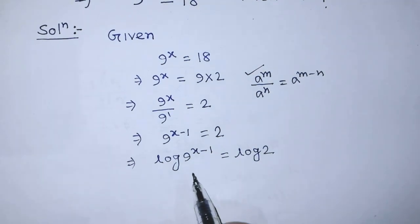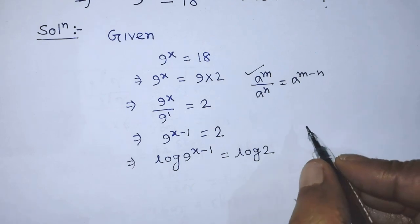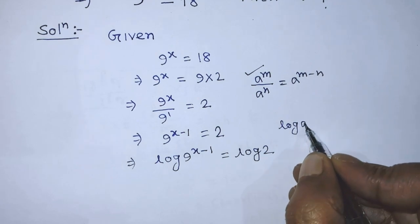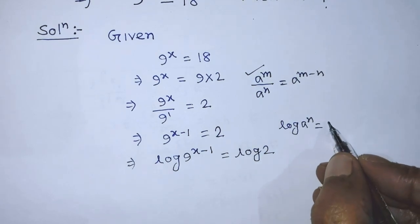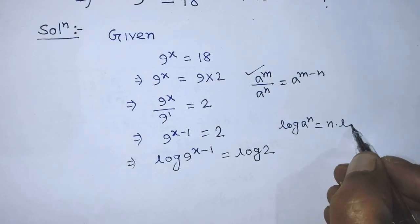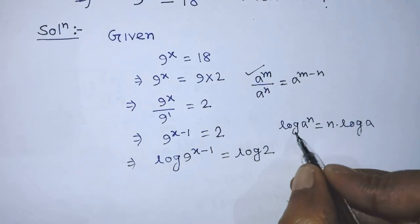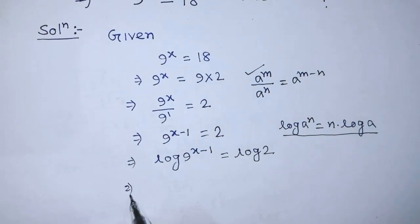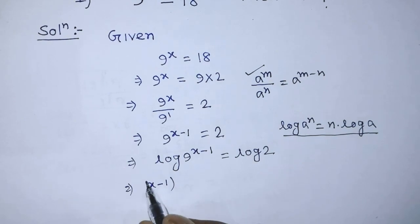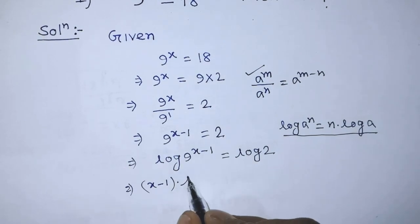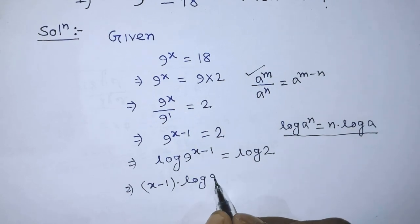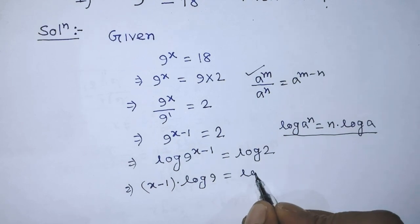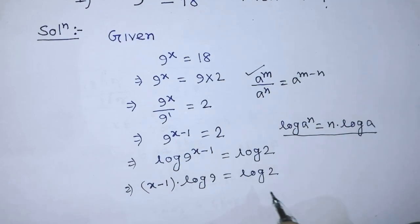To simplify the left hand side of this equation, we have to apply the formula: log of a to the power n is equal to n times log of a. According to this formula, we can write from the left hand side x minus 1 times log of 9, equal to log of 2 on the right hand side.